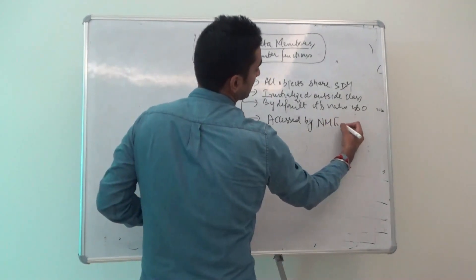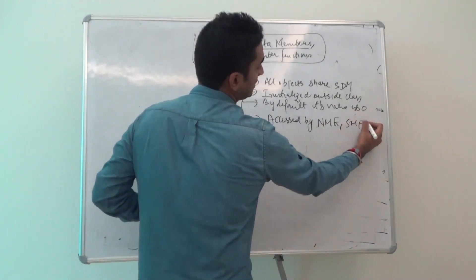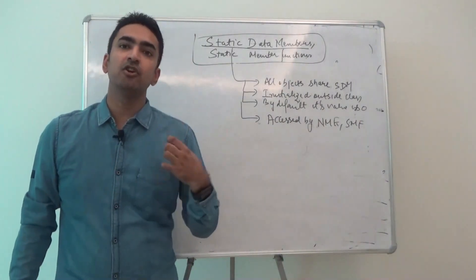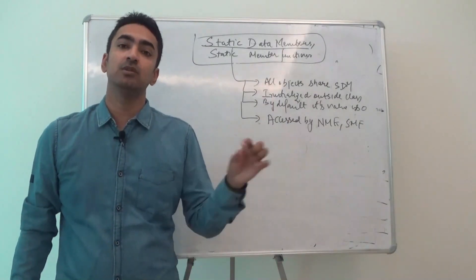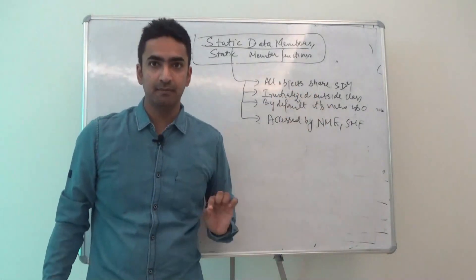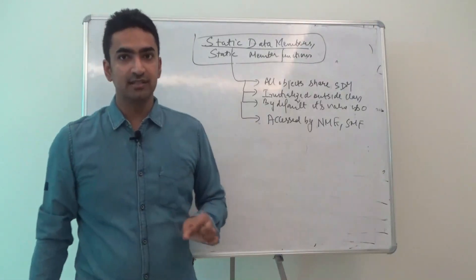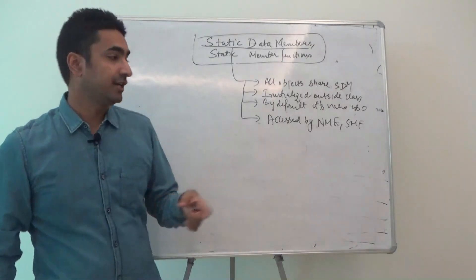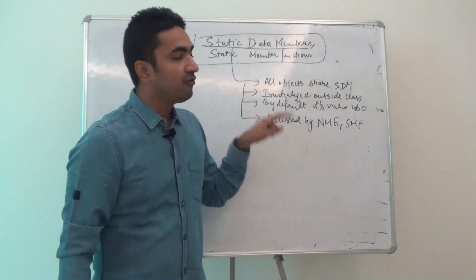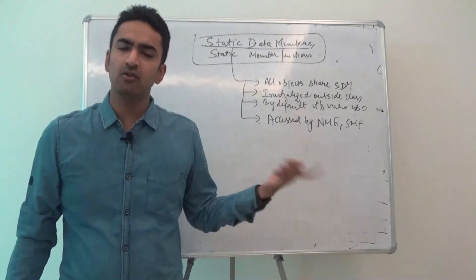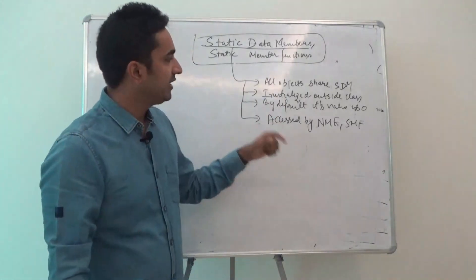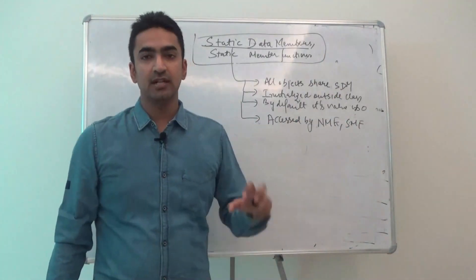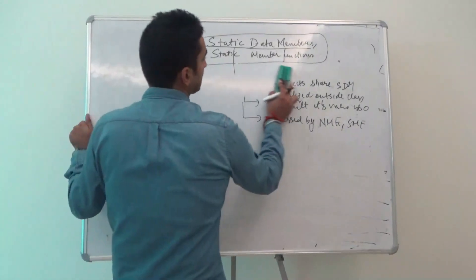It can be accessed by normal member functions. Those are the main properties of static data members. Firstly, they hold the same memory for different objects — if I have five objects, all five objects will share the same memory for that data member. It has to be initialized outside the class. By default it will hold the value of zero, and it can be accessed by all member functions or even static member functions.